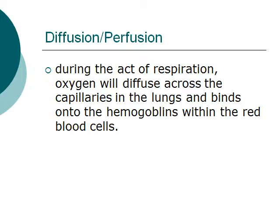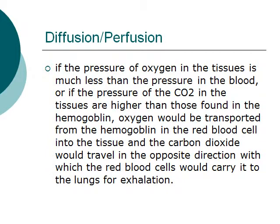During the act of respiration, oxygen will diffuse across the capillaries in the lungs and bind onto the hemoglobin within the red blood cells. If the pressure of oxygen in the tissues is much less than the pressure in the blood, or if the pressure of carbon dioxide in the tissues is higher than that found in the hemoglobin, oxygen would then be transported from the hemoglobin in the red blood cells into the tissue.